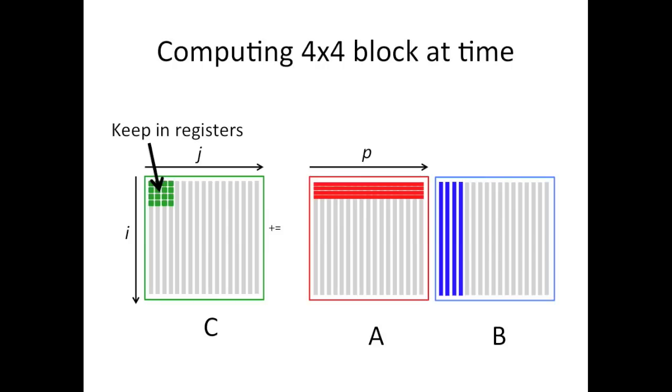And here by working with four rows of A at the time, if you do that right, you end up using the four contiguous entries of A when you compute. And you get the benefit of that cache line. How well does that work?